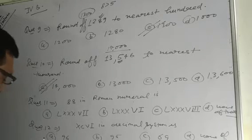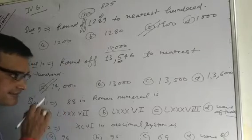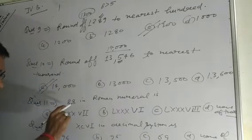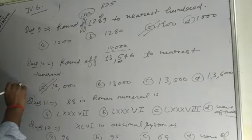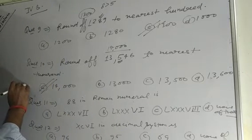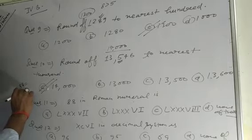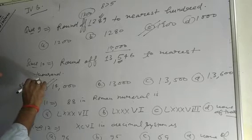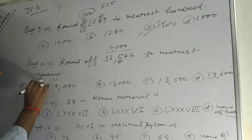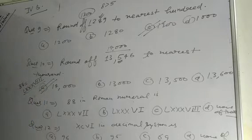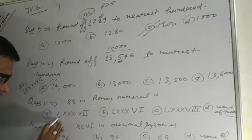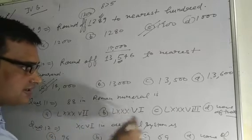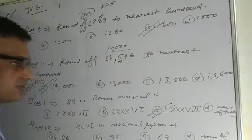Question number 11. Write 88 in Roman numerals. 88 is written as LXXXVIII: L equals 50, XXX equals 30, V equals 5, and III equals 3, giving 50 plus 30 plus 5 plus 3 equals 88. Therefore, option C is the correct answer.